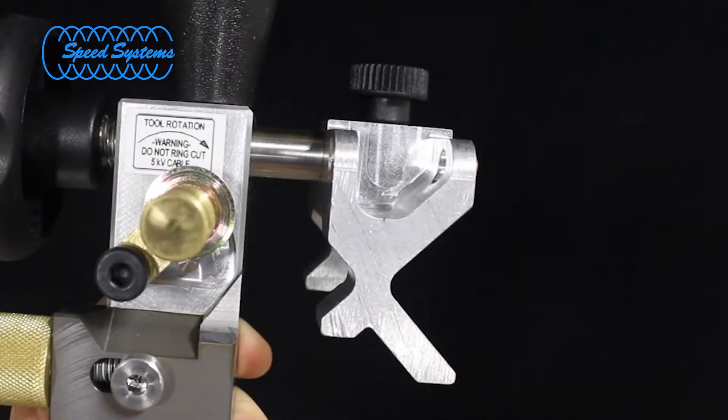The model 2900 features a reversible V block that allows you to select either the small or large V depending upon the cable you are preparing.